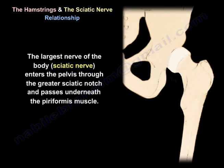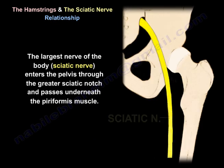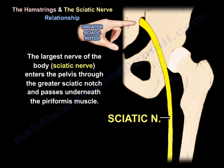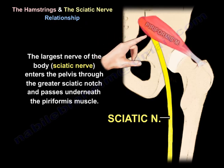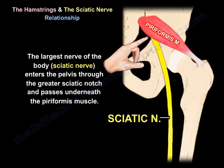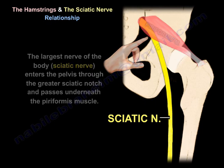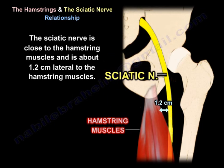The largest nerve of the body, called the sciatic nerve, enters the pelvis through the greater sciatic notch and passes underneath the piriformis muscle. The sciatic nerve is close to the hamstring muscles — approximately 1.2 cm lateral to them.